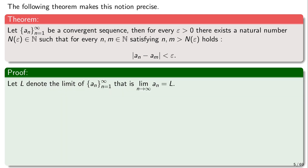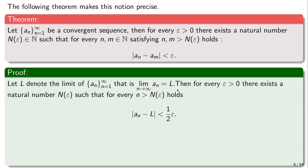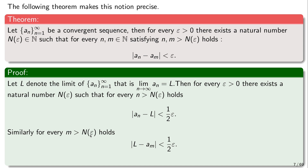Let us prove this theorem. We need to unfold the definition of a sequence limit. Suppose that L is the limit of the sequence a_n, meaning a_n converges to L. This means that for every positive epsilon, we can find an initial number N(ε) such that for every n greater than N(ε), the distance between a_n and L is smaller than epsilon over 2. Similarly, if we choose m greater than N(ε), we also have the corresponding inequality for a_m.